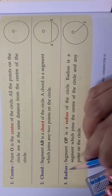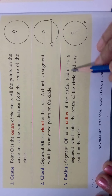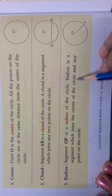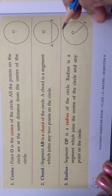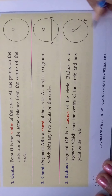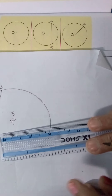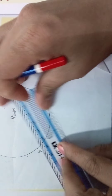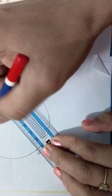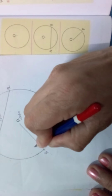Come, we will see the next thing — that is the radius. What is radius? Segment OP is a radius of the circle. Radius is a segment which joins the centre of the circle and any point on the circle. It is a line segment with two end points O and P. Come, I will draw the radius. We want radius — it is a segment which joins the centre to any point, say R, on the circle.